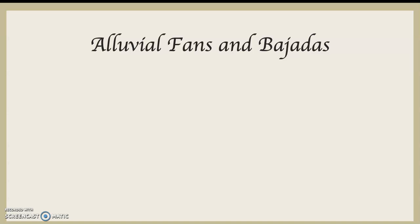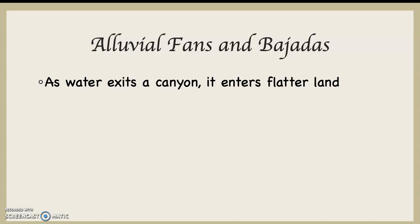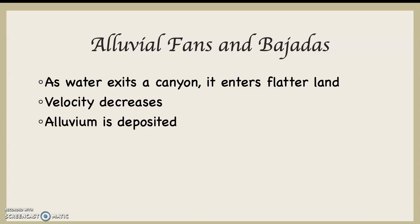Part of the premise here is this: when water is coming down a steep landscape, its ability to erode and degrade the landscape is significantly increased compared to what happens in a flat landscape, where the water slows down and deposits material. As water exits a canyon coming down out of a mountain and enters flatter land, velocity decreases and alluvium is deposited — forming a physical feature known as an alluvial fan.